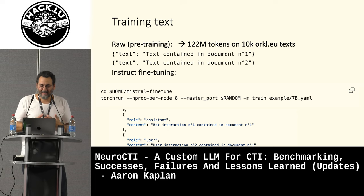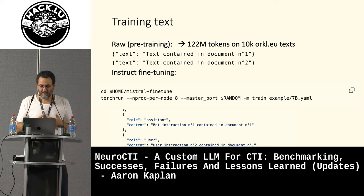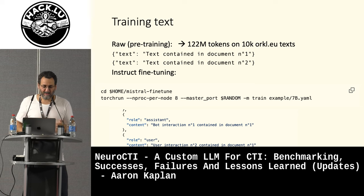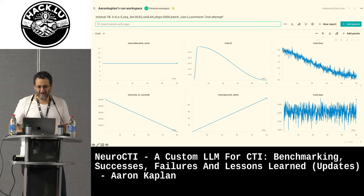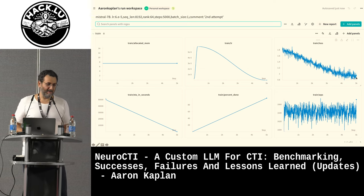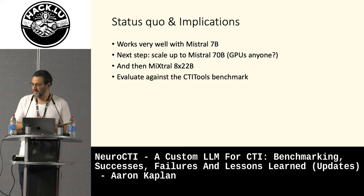How do we actually train it? The training part is easy and well-documented. It's Torch Run with eight GPUs in this example. You set a config file — not too long, easy to understand, well-documented — and you get a training run. If it's a good run, you have a high loss that goes down towards one. Then you test it and profit. Status quo: it works very well with Mistral 7B. I need more GPU power for the larger models.